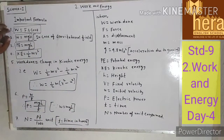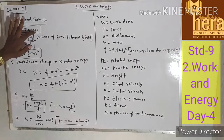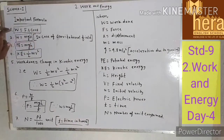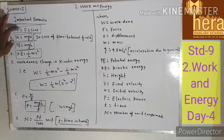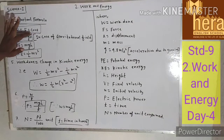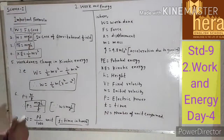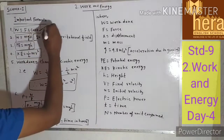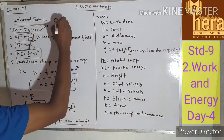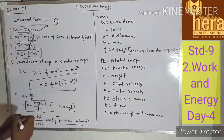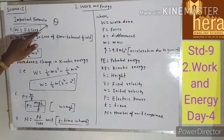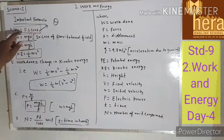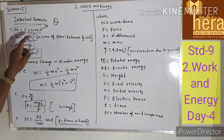The first formula is W = F × s × cosθ. Here W is the work done, F is the force, s is the displacement, and theta is the angle between force and displacement.